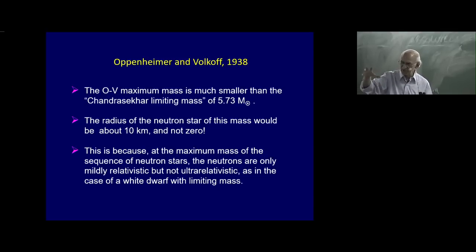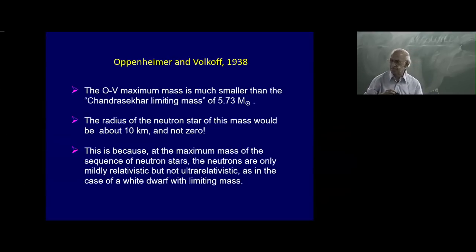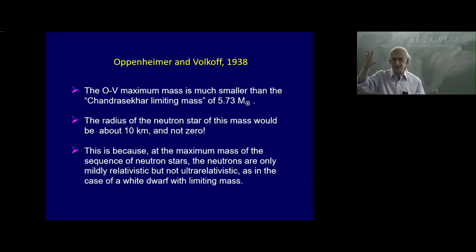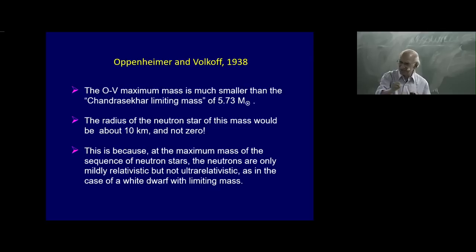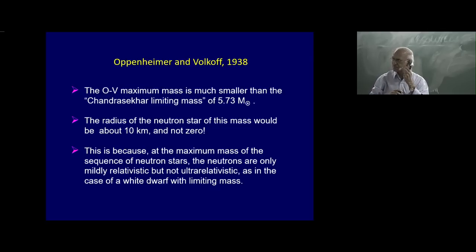Maximum mass in the sense that if you go to larger mass, it is unstable. Although the maximum mass came to 0.7 solar masses, Oppenheimer conjectured already in 1938 that the real maximum mass of a neutron star may be significantly larger — maybe one or two solar masses.